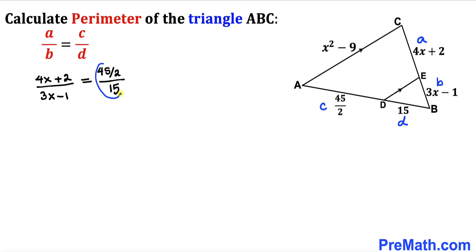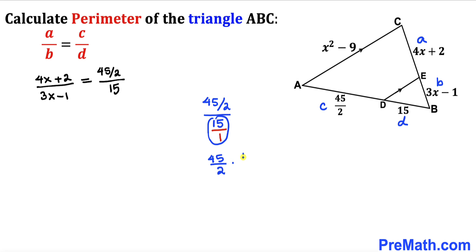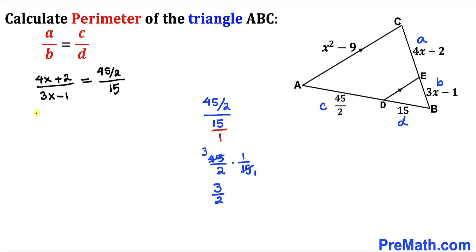Let's simplify the right-hand side fraction. I can write 15 as 15 over 1, so dividing 45/2 by 15 gives us 45/2 times 1/15, which reduces to 3 divided by 2. So our proportion becomes 4x plus 2 divided by 3x minus 1 equals 3 divided by 2.